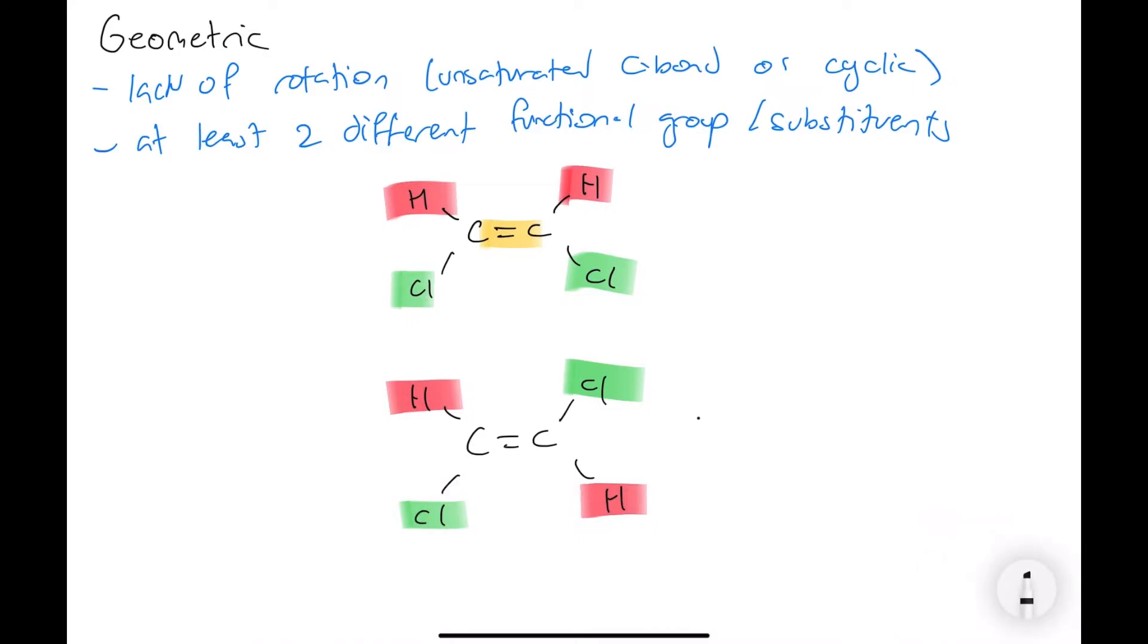Okay. So to name geometric isomerisms, we just have to add the letter E or the letter Z at the front. And to remember which letter: E is enemy and Z is zame-side.